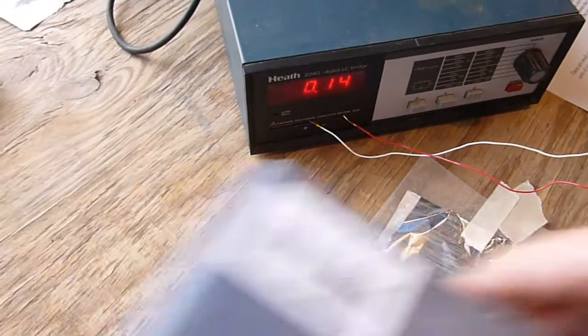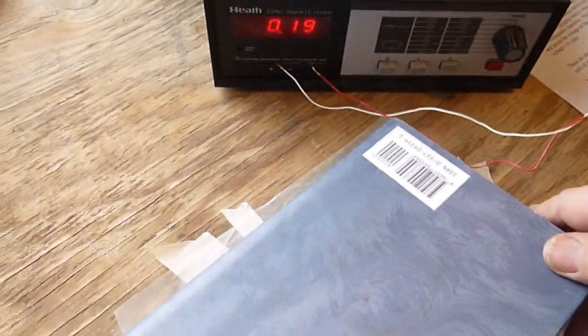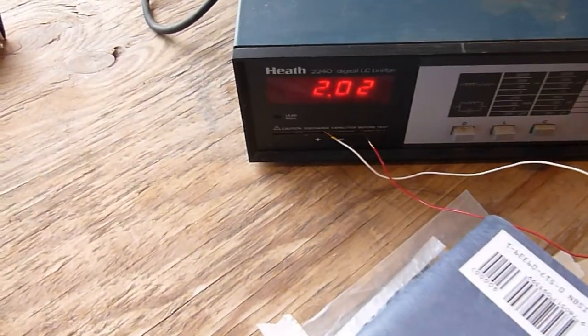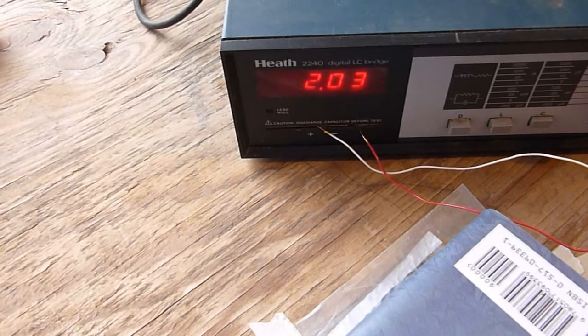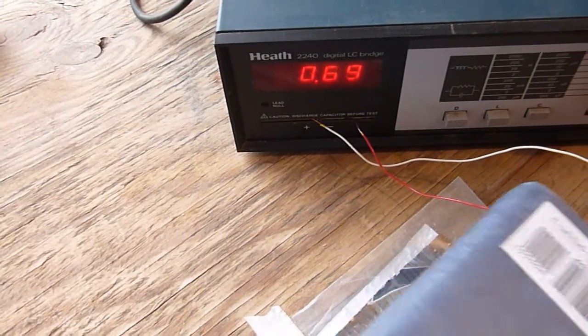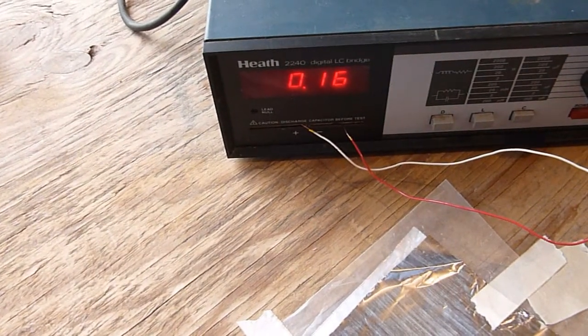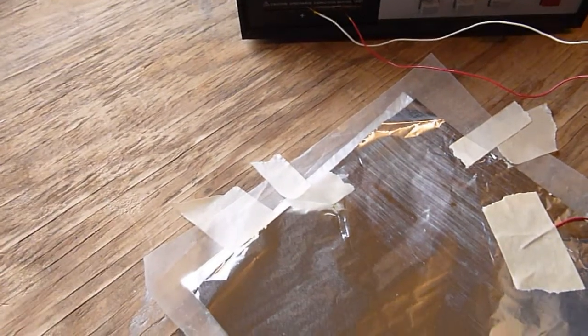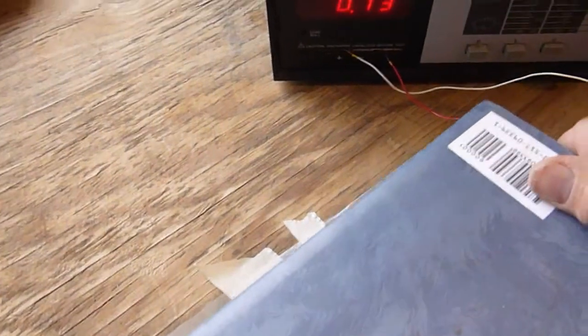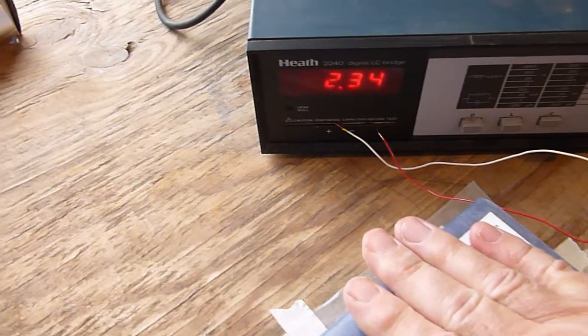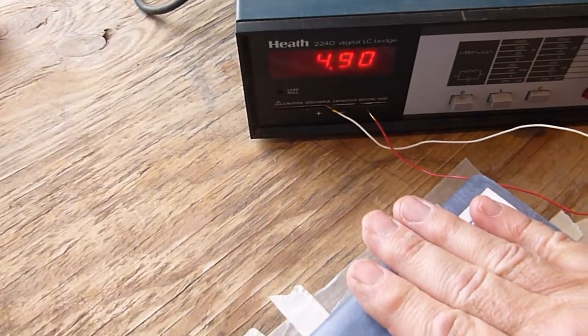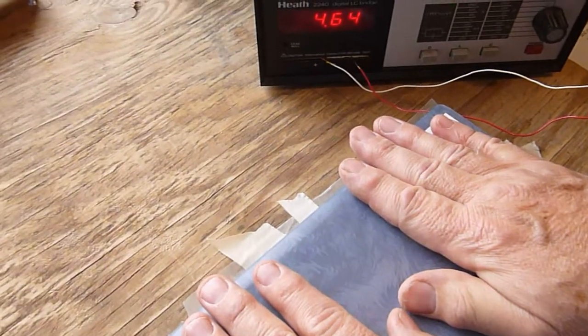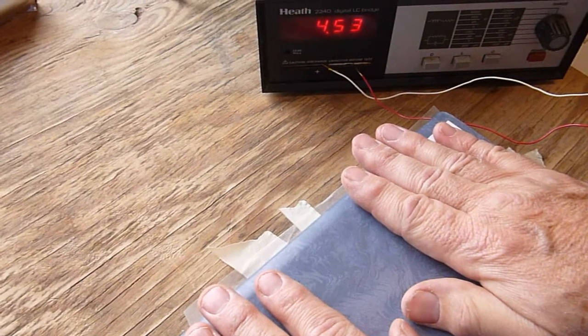Now, we'll see what happens when we put a book down to press it down. It shoots up to over two billionths. We take it off, it's less. What we're doing, we're getting these two plates, which are the aluminum foil, closer together when we do this. And the closer we get together, look at that. The higher the capacitance and the more energy can be stored.